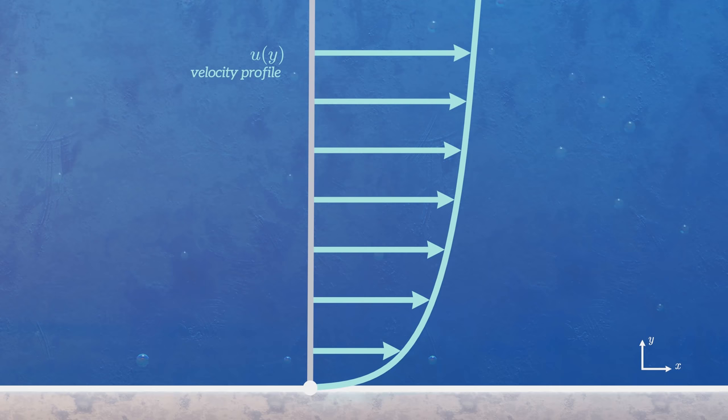The magnitude of the shear stress acting between the layers of the fluid is closely linked to the slope of the velocity profile, du over dy, where u is the fluid velocity and y is the distance from the wall.